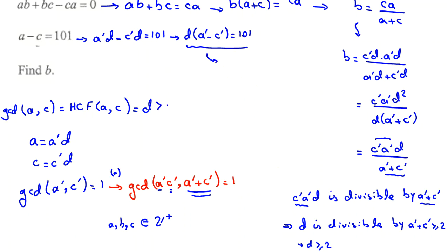D, GCD is always positive. So the only possible case, because 101 is prime and D is at least 2 because of this part, here we can say the only possible case is D equals 101 and a prime minus c prime equals 1.